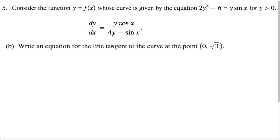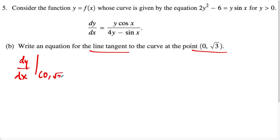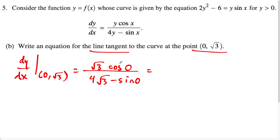For part B, we want to write the equation of a tangent line to the curve at the point zero comma square root three. We plug the point into our derivative because the derivative gives us the slope of the tangent line. Plugging in square root three for y, we have square root three times cosine of zero over four times square root three minus sine of zero. Since cosine of zero is one and sine of zero is zero, this simplifies to square root three over four square root three.